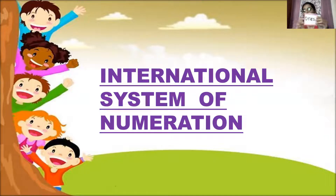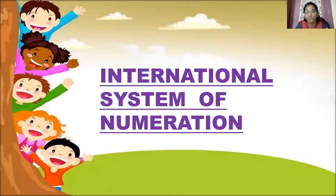The three periods are: ones period, then you have thousands period, then you have millions period. In the ones period, you have three places: ones, tens, hundreds. In the thousands period, you have thousands, ten thousands, hundred thousands. And in the millions period, you have million, ten million, hundred million. So in international system, you have three periods with three places in each period.